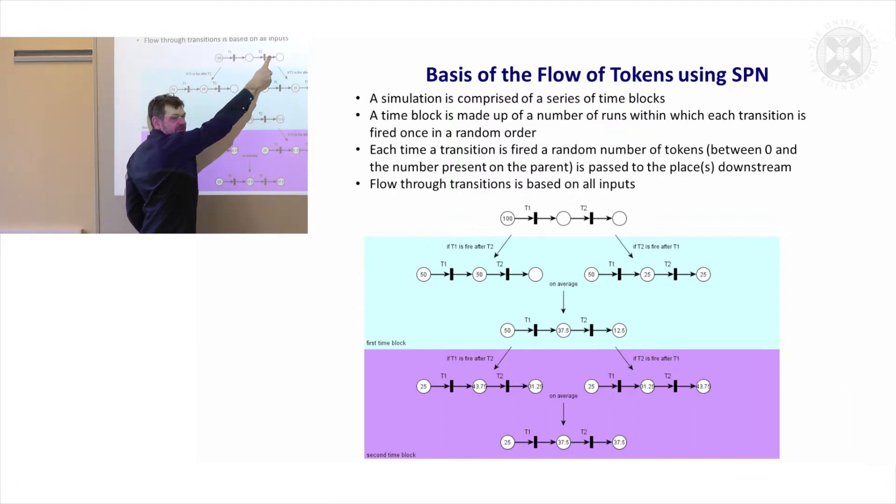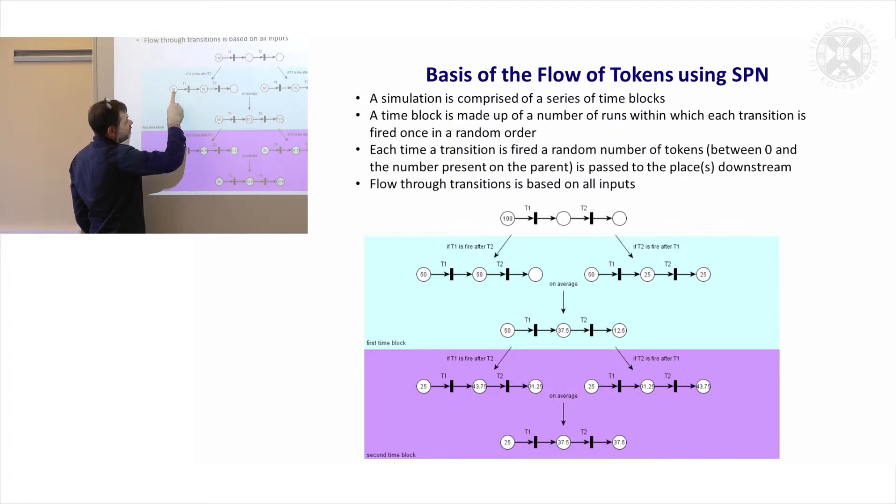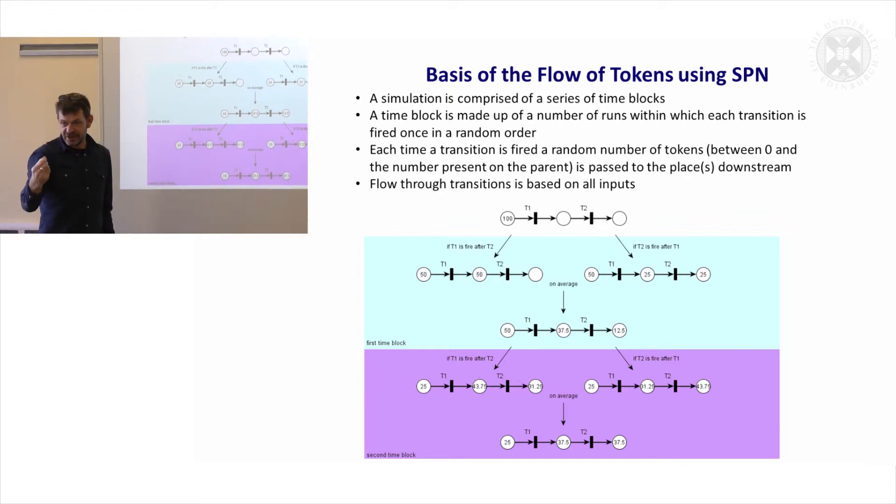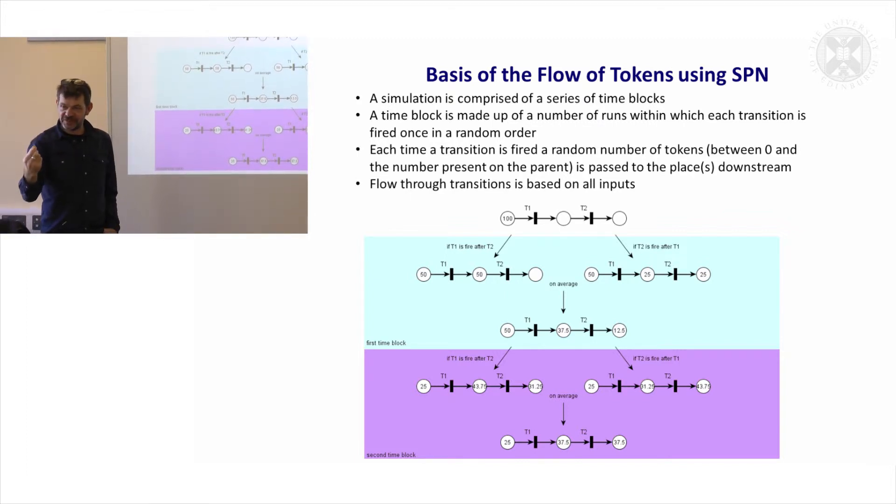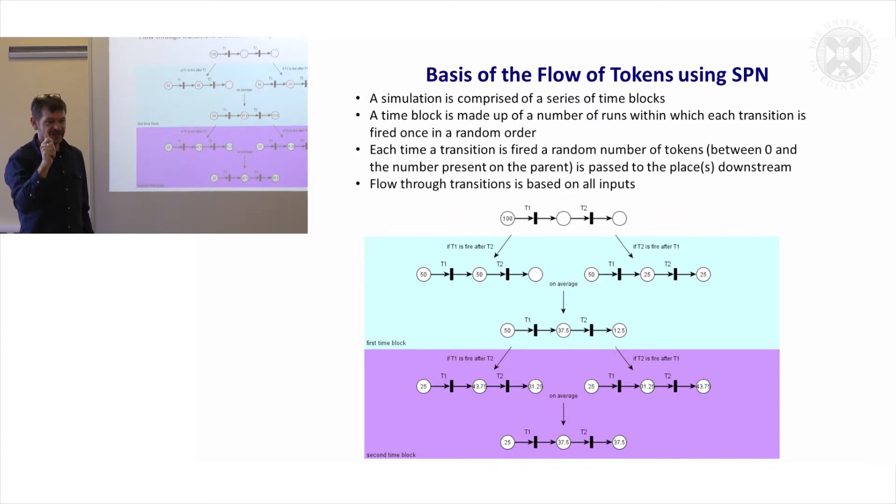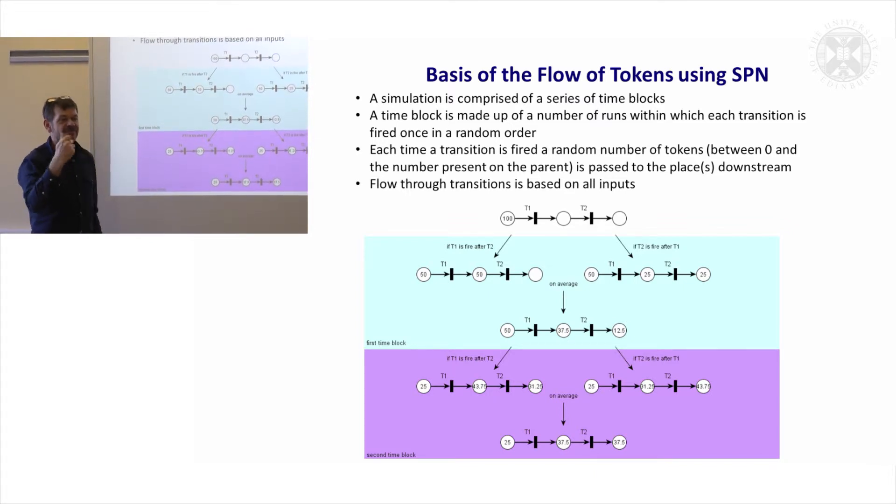Why this is important is because if T2 fires first, but of course there's no tokens there, so no tokens have moved down there. If T1 fires first, then tokens can move over here and we move on average 50 tokens, but it's random. On average, it will be 50, but in reality, in any given firing, it could be 0 to 100.